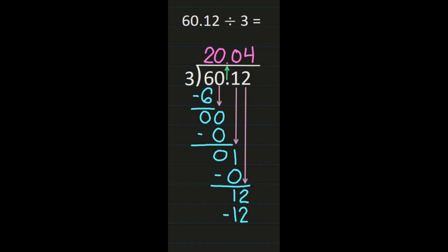I don't have any more digits in my dividend, so I am done here. Notice as I worked through my problem, I brought the decimal straight up and with every digit I made sure I lined up the numbers in my quotient so they're in the right place. My quotient is 20 and 4 hundredths.